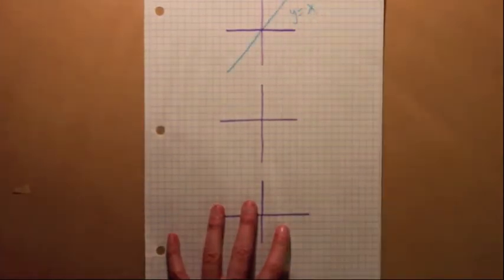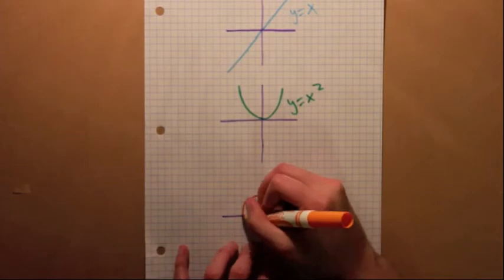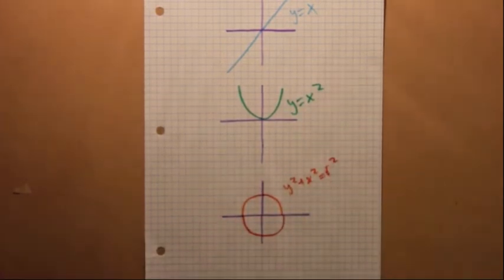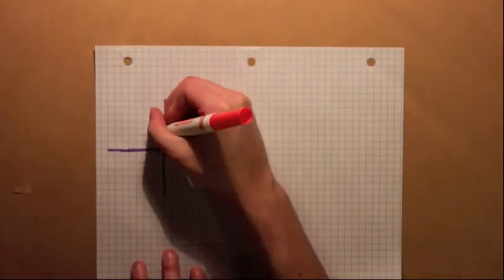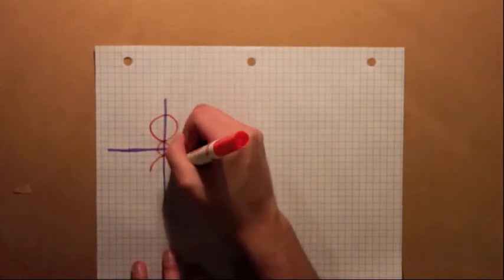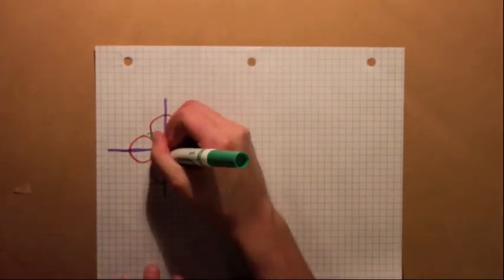In math class you learned about graphing, but only things like lines, parabolas, and circles. I guess you could draw a flower by connecting multiple circles together, but then you're left with a weird gap in between the petals and the center of the flower.